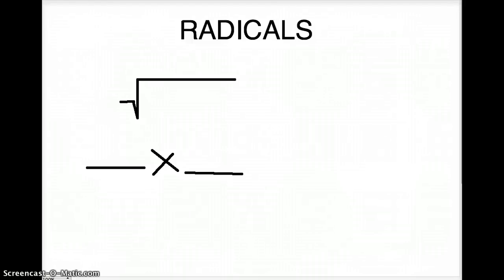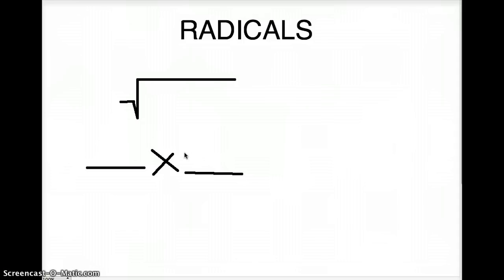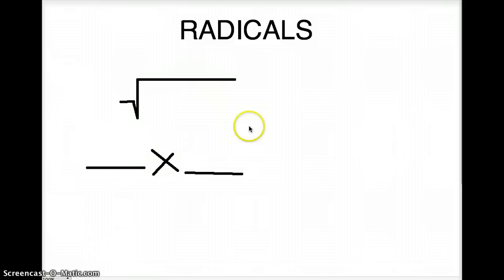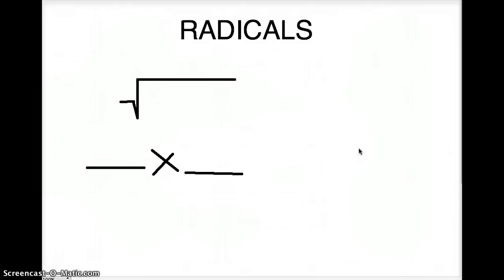Today we are going to be working with radicals, and mainly simplifying radicals. What a radical is, it is basically a square root. If you don't know what a square root is, a square root is basically a number times itself that gives you a number.